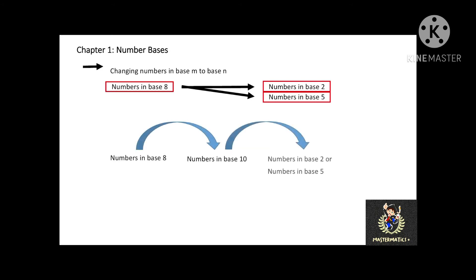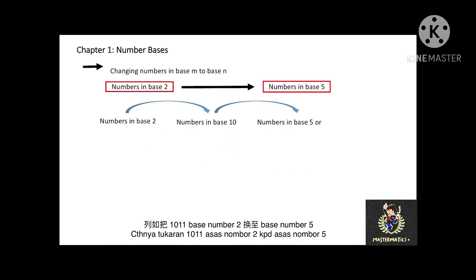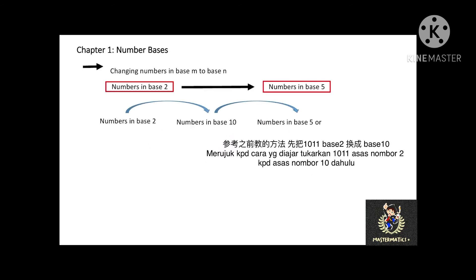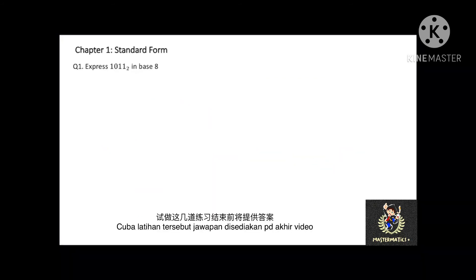For example, 1011 base 2 converted to base 5. First, we use the method from the previous example to convert from base 2 to base 10, which gives 11 base 10. Then from this 11 base 10, we use the method of repeated division to get the number in base 5. You may pause the video for 5 minutes and try this question — the answers are provided at the end of this video.